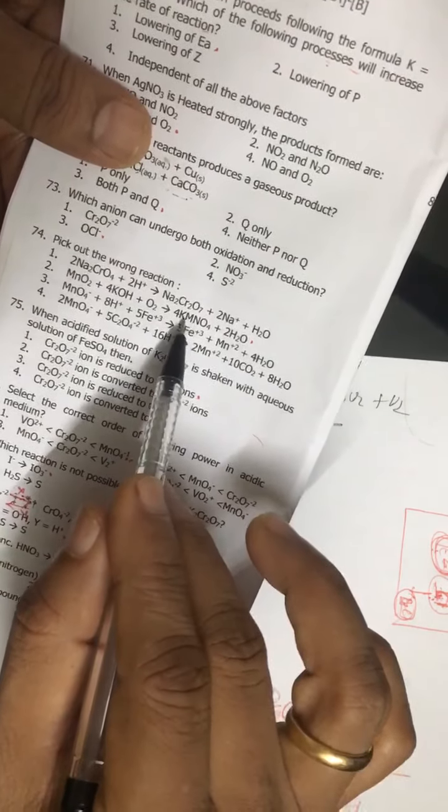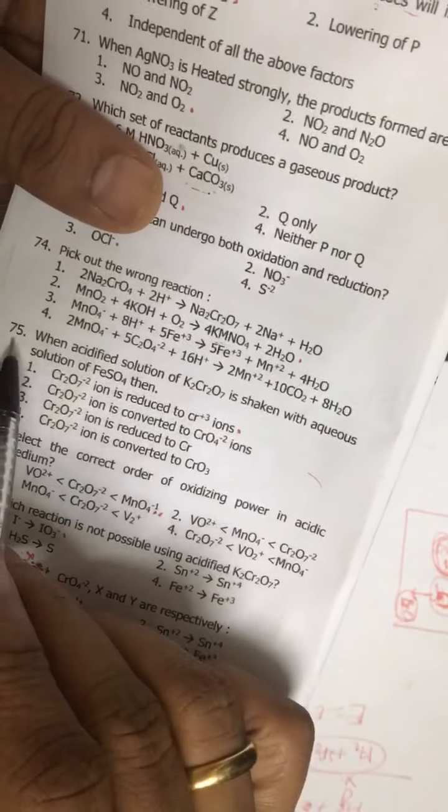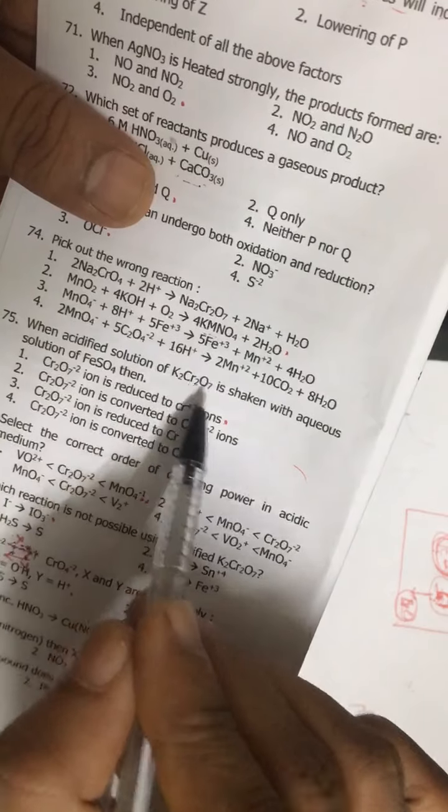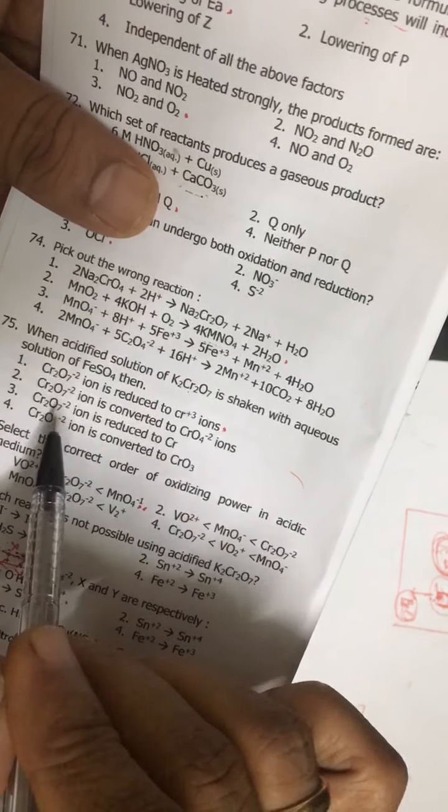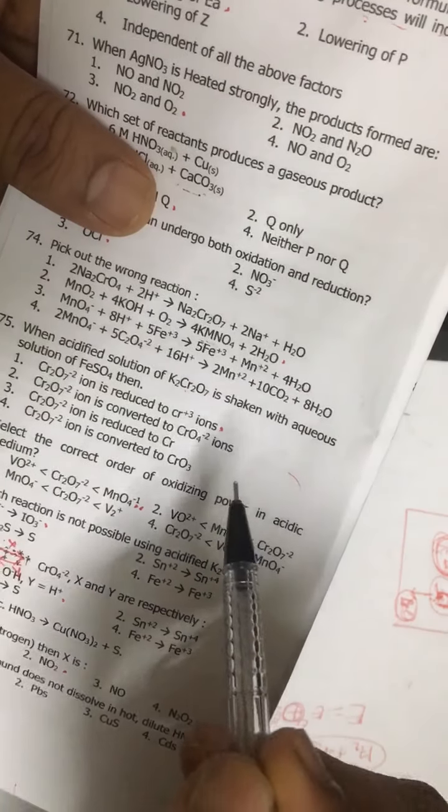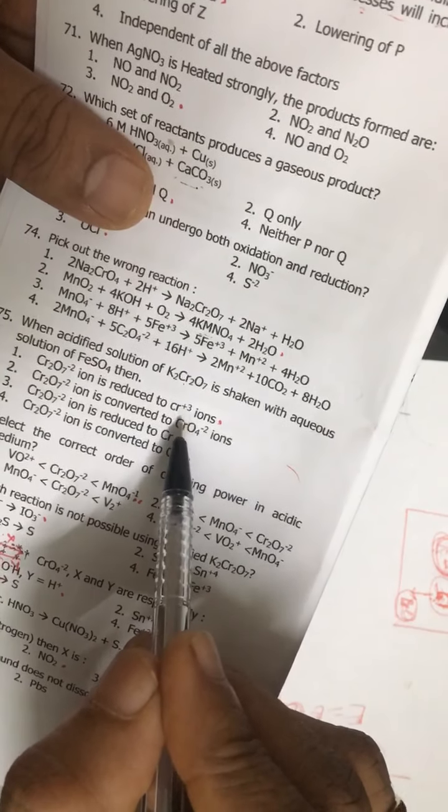Question 74: it is the wrong reaction. The correct one is second one - here it should be K2MnO4, not KMnO4. Question number 75: when acidic K2Cr2O7 is treated with FeSO4, what happens to dichromate ion?